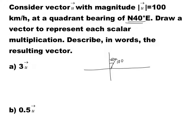Draw a vector to represent each scalar multiplication describing in words the resulting vector. For instance, vector 3U — this means that it's triple in magnitude and in the same direction. So this means that if I represent this one as vector V, vector V is going to be 300 kilometers per hour, but the same direction, which is north 40 degrees east.